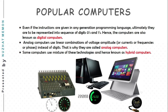Now we look at popular types of computers. Instructions are ultimately represented as sequences of digits — zeros and ones — so computers are known as digital computers. Analog computers use linear combinations of voltage amplitude, currents, frequencies, or phases instead of digits; a speedometer is a classic example. Computers that use a mixture of both technologies are known as hybrid computers.